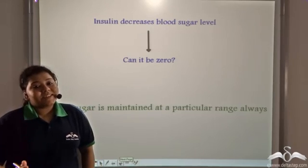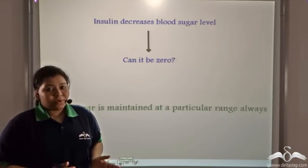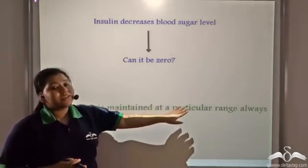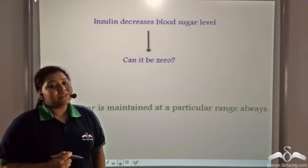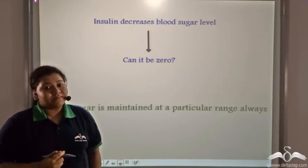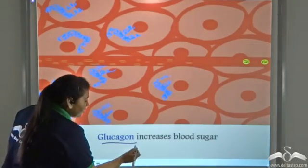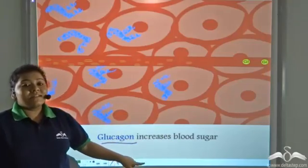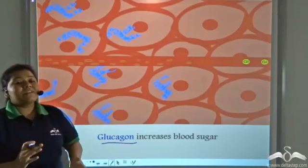So insulin decreases the blood glucose level. Now can it decrease it to zero? Well no, it cannot. This is because blood sugar is maintained at a particular range always. So there must be something that opposes the function of insulin and maintains the blood glucose level. What is it? The pancreas secretes a second hormone which is known as the glucagon. And the function of the glucagon is to increase the blood sugar level. So insulin and glucagon work opposite or oppose the functions of each other.